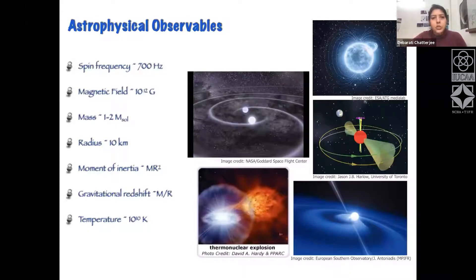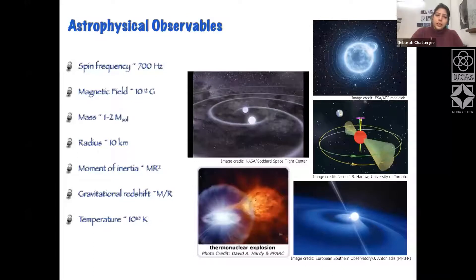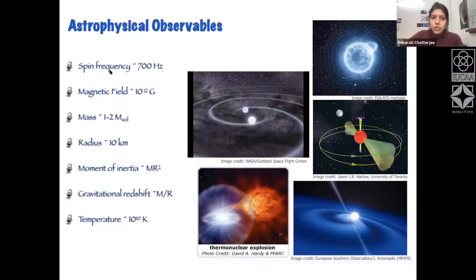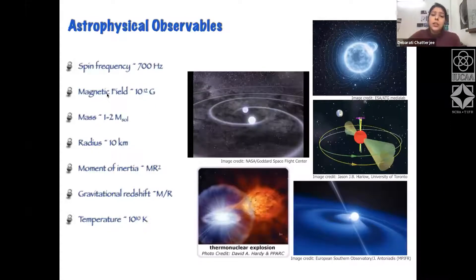From radio to X-rays and gamma rays, we have many different observables we can derive from neutron stars. Spin frequencies can be determined very accurately — up to 700 hertz for pulsars. Magnetic fields are typically around 10 to the 12 gauss, but for magnetars can reach 10 to the 15 to 10 to the 16 gauss. Masses of neutron stars from observational data are around one to two times that of the Sun, and the radius is typically around 10 kilometers.